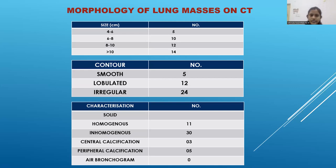Morphology of lung masses on CT: 5 cases were of size 4–6 cm, 10 cases were 6–8 cm, 12 cases were 8–10 cm, and 14 cases — the majority — were more than 10 cm in size. 5 cases had smooth margins indicating benign etiology, while 12 cases had lobulated and 24 cases had irregular contour, indicating malignant lesions. Solid homogeneous lesions were 11, solid inhomogeneous lesions were 30, 3 lesions had central calcification, 5 had peripheral calcification, and none had air bronchogram.